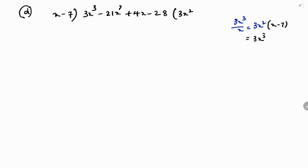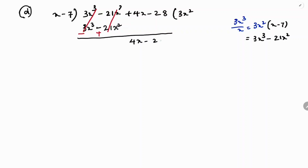Multiply 3x² with x - 7: 3x² × x = 3x³, and 3x² × 7 = 21x². So we get 3x³ - 21x². Subtract: 3x³ cancels, and -21x² + 21x² also cancels. Whatever is left, bring down +4x - 28.